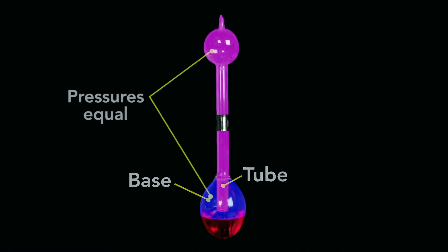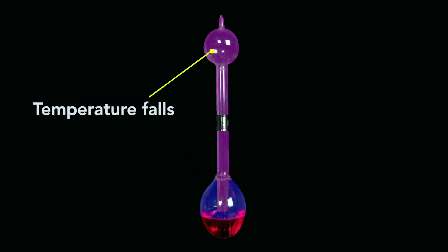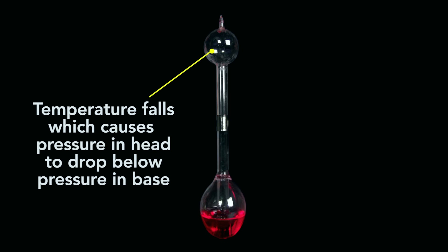So at rest the pressure in these two spaces are equal, but when the bird's beak is wet, the temperature falls, and as I'll explain in a moment, the pressure in the head drops below that in the base and the liquid rises.